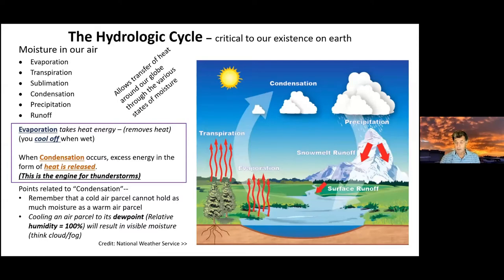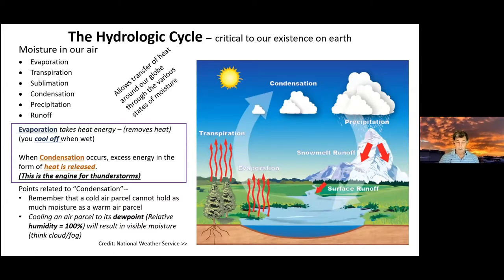Moisture moves heat around. At the equator, with direct sun, we have a lot of evaporation — and evaporation takes energy, removing heat from the environment. At the poles, we have condensation, and when condensation occurs, heat is released. This is very important: evaporation removes heat, condensation releases heat. Keep those two facts in mind as we move forward.